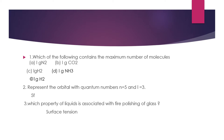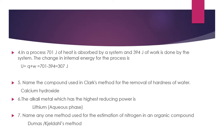Question 3: Which property of liquids is associated with fire polishing of glass? When glass is cut, the end is sharp. On heating it melts and acquires a smooth surface. This is due to the property of surface tension. So the answer is surface tension.